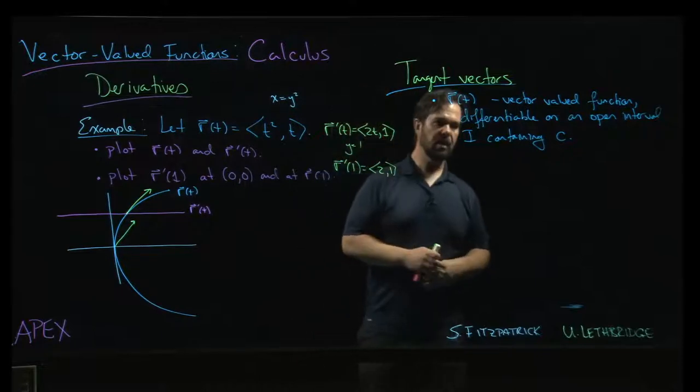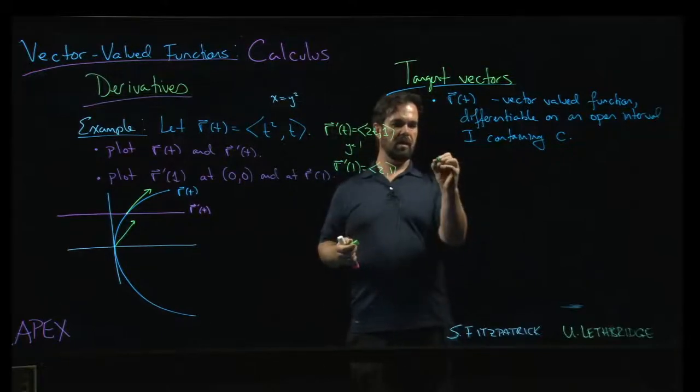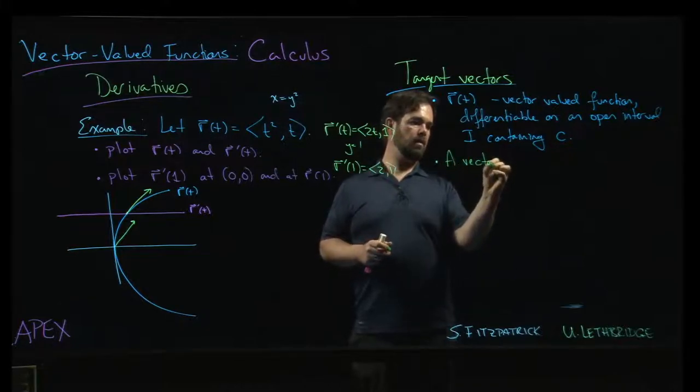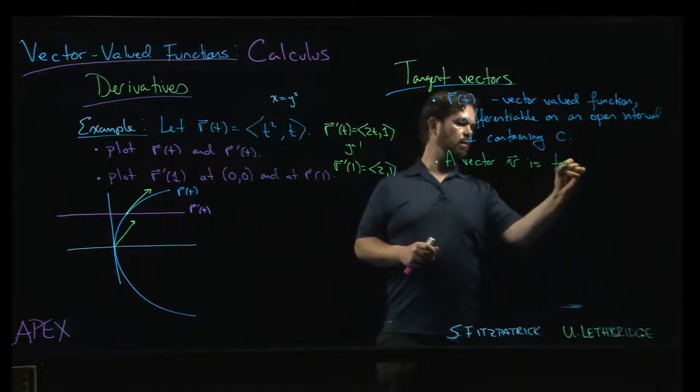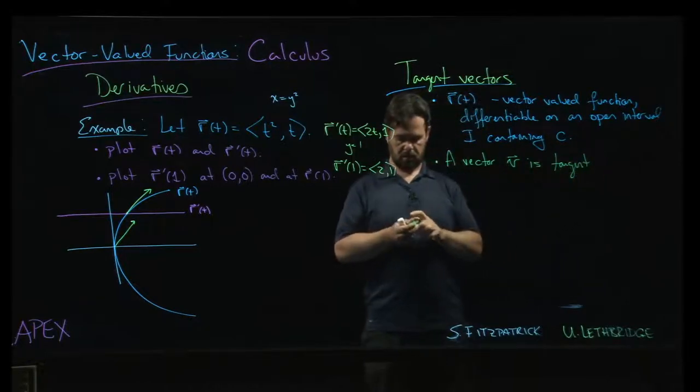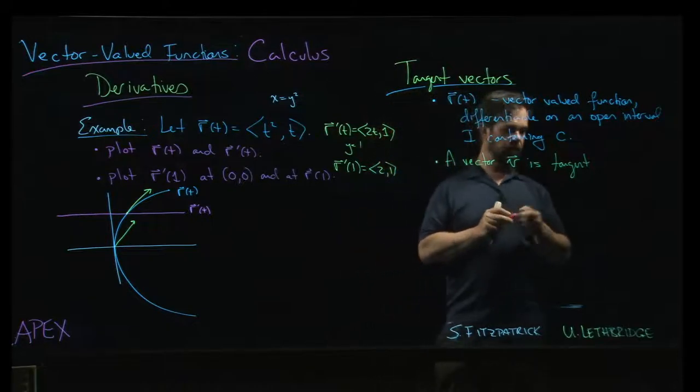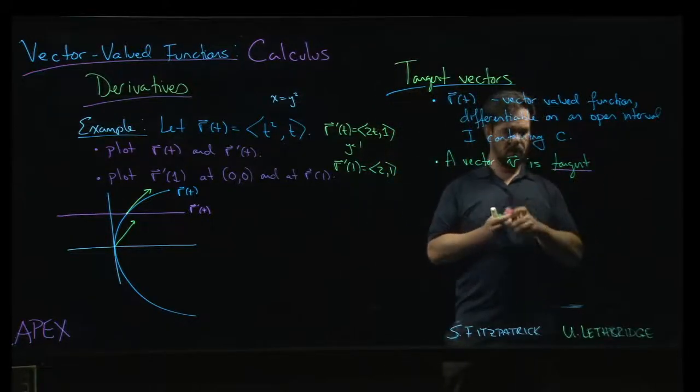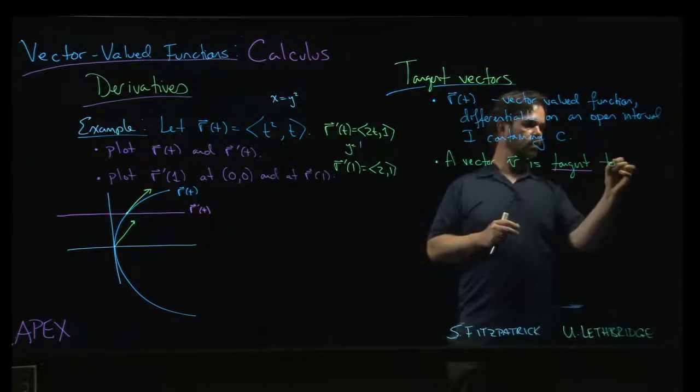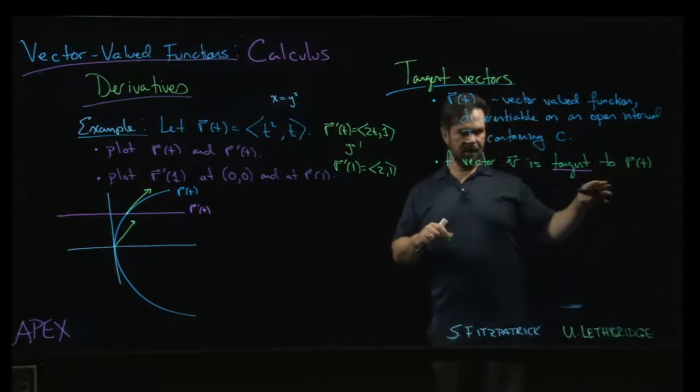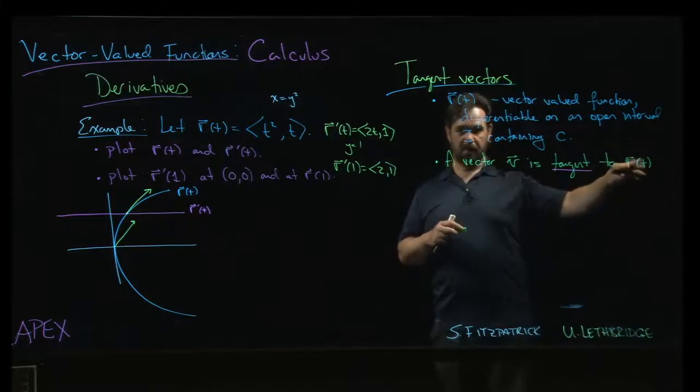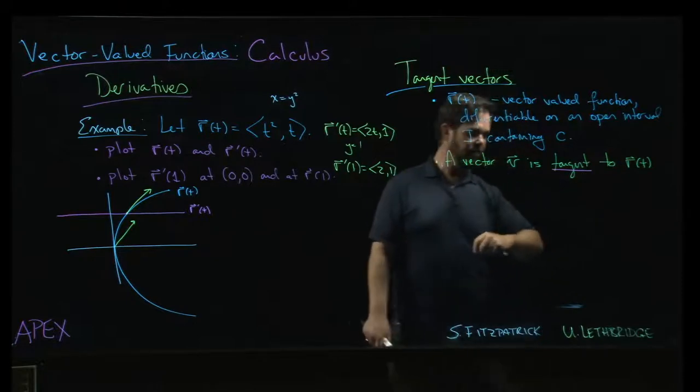And so with that in mind, we can say that a vector, let's say v, is tangent. Let's underline that. And I'm going to be a little bit lazy about notation here. When I say tangent to r(t), I mean the graph of r(t), right? The curve that's generated by that vector-valued function.